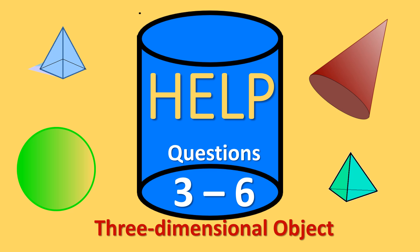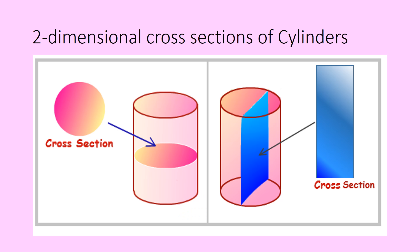Help for questions 3 through 6, three-dimensional objects. Let's start with a cylinder. If you have a horizontal cross section, which they're showing you on the left, you will get a circle. Notice it's the same shape as the base.